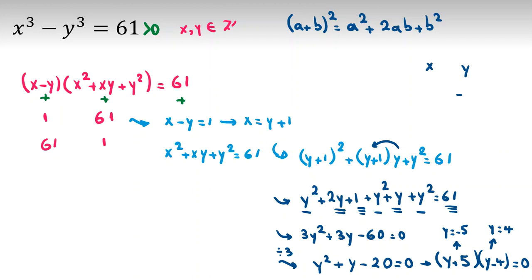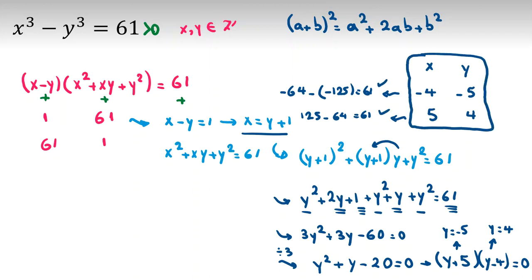x, y: when y is negative 5, x is negative 4. When y is 4, x is 5. And x is y plus 1. Now let's replace in x cubed minus y cubed. First case: negative 64 minus negative 125, which is 61. Second case: 125 minus 64, which is 61. So we found these two answers so far, and both of them satisfy the main equation.